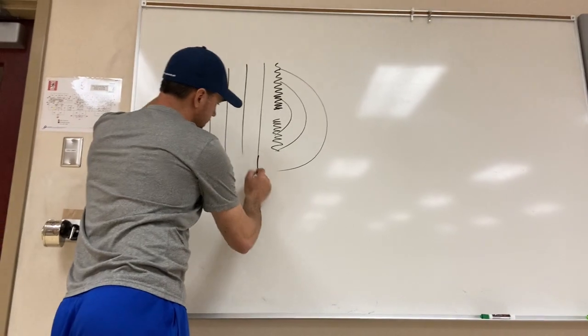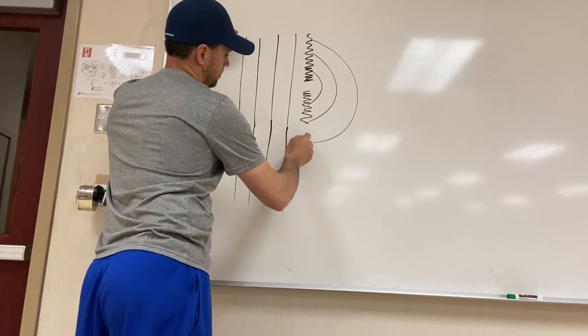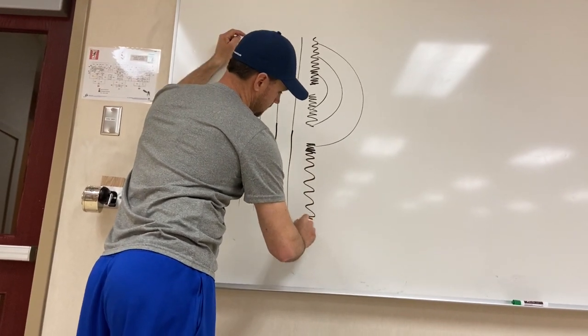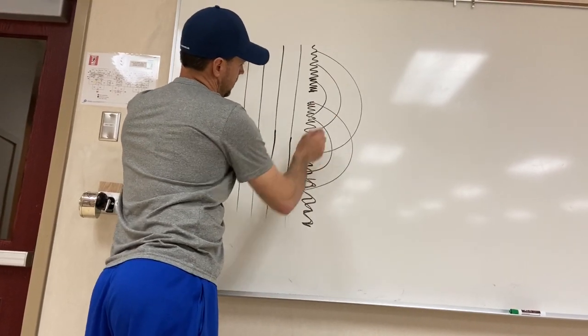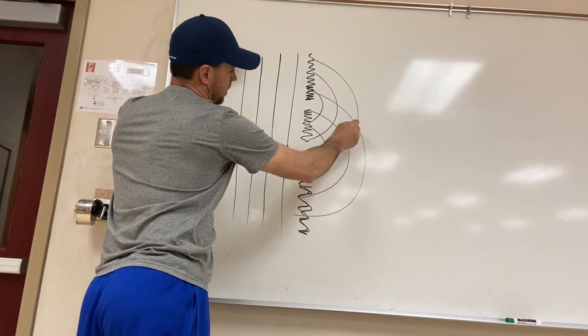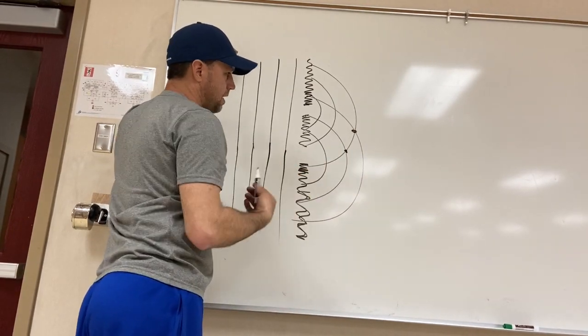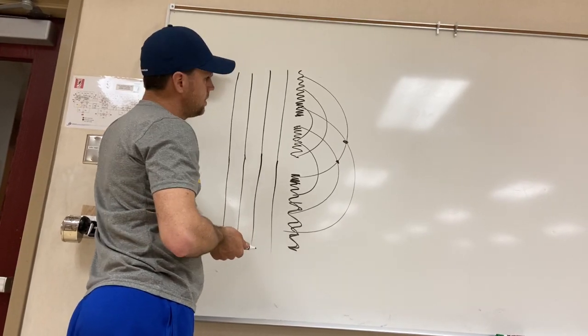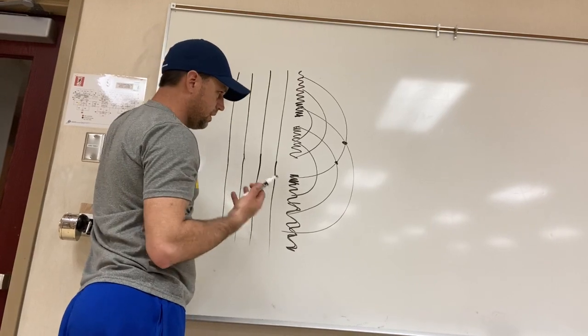Well, if I had two of these openings, so we'll make another opening here. This wave is going to fan out as well. Well, any time that these waves meet at the same spot, we're going to get a bright spot because the crests will meet crests and you're going to get an interference pattern.